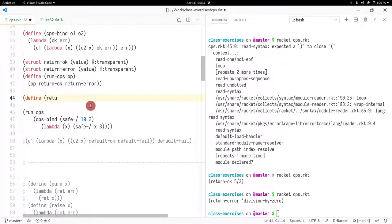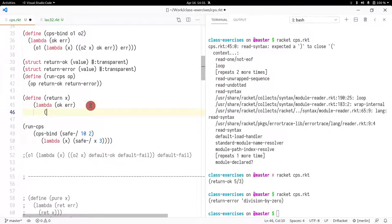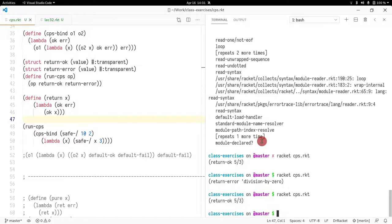Well, I would do it. Let's call this return. So return X. So X takes an OK and an error. And if I want to return X, I simply call OK and I pass X to it. Does that make sense? So if I want to return X.